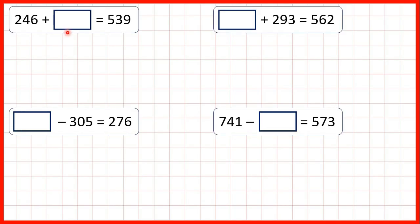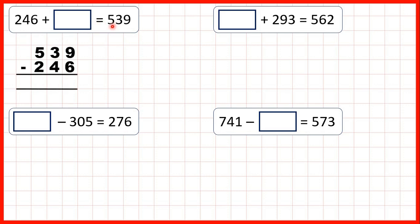We have some missing number addition and subtraction problems. First, 246 plus something equals 539. Whenever we have a missing number addition, we always use subtraction to find our missing number. So we need to work out 539 minus 246.